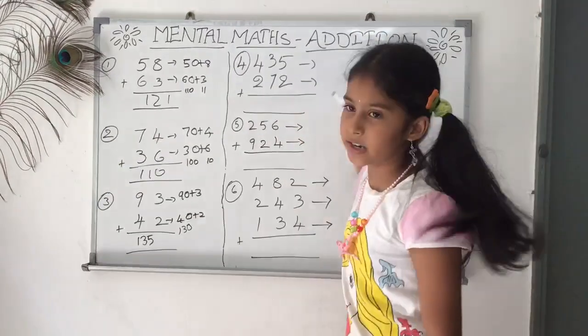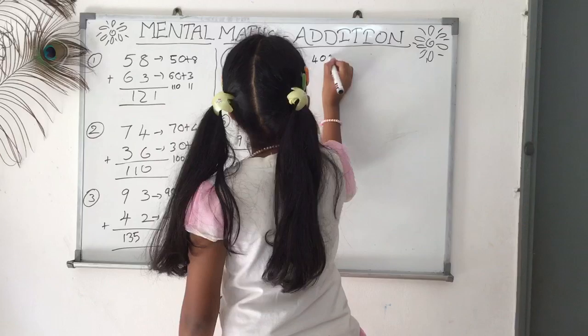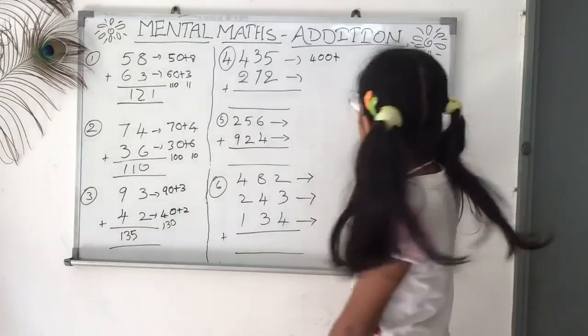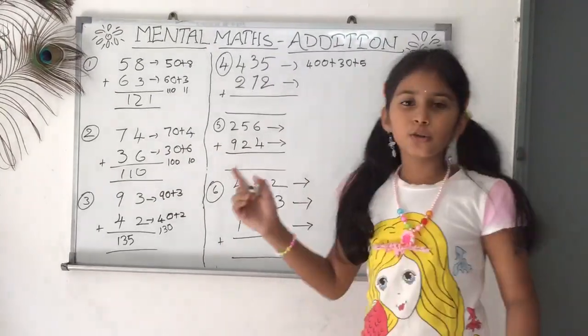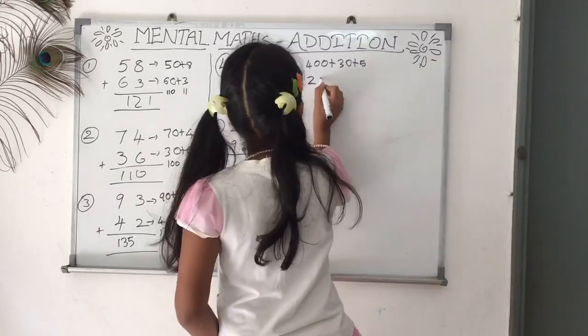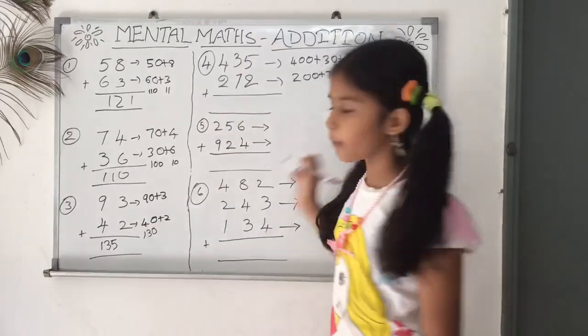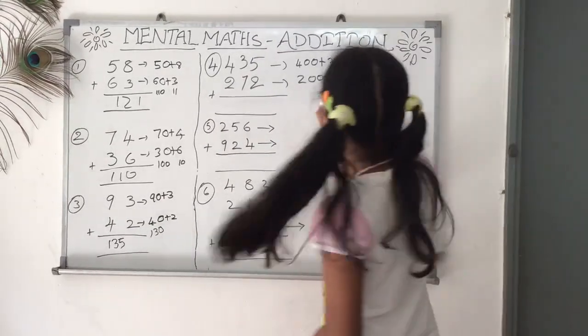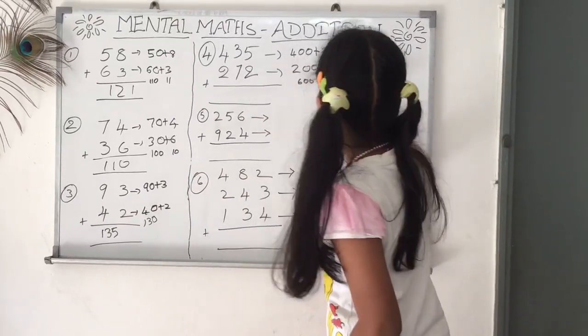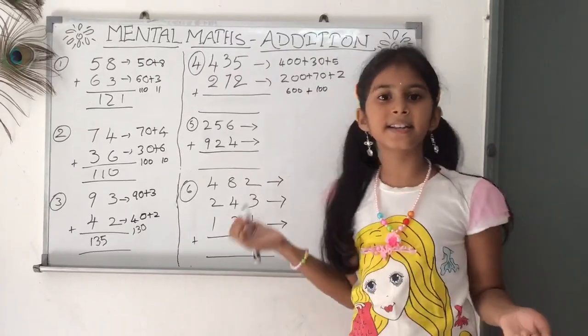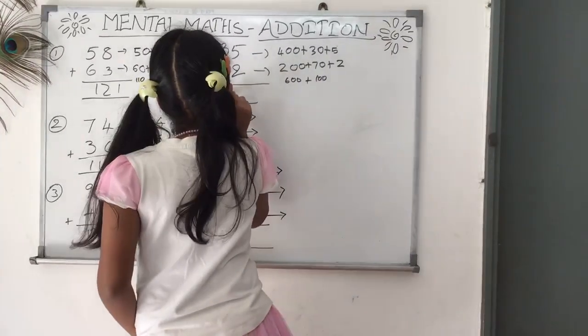So let's go to the fourth question. This is three digits. 435 is 400 plus 30 plus 5. Similarly, 272 is nothing but 200 plus 70 plus 2. Now we need to add 400 plus 200, which we get 600. 30 plus 70, we get 100. So 600 plus 100, we get 700. Now 5 plus 2 is 7. So the answer is 707.